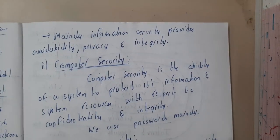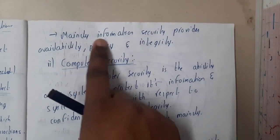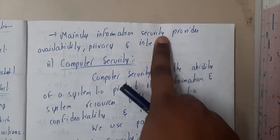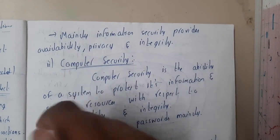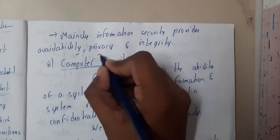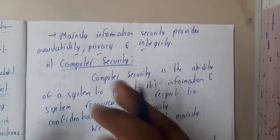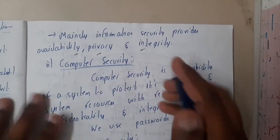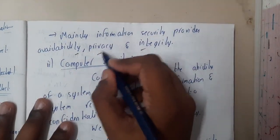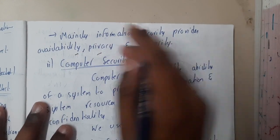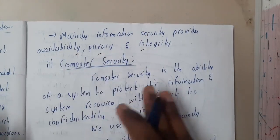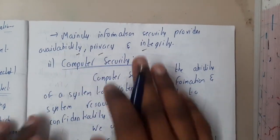Mainly, information security provides availability, privacy, and integrity. You need to have privacy, you need to have integrity, and you will have availability. We'll be discussing these terms in detail as well.